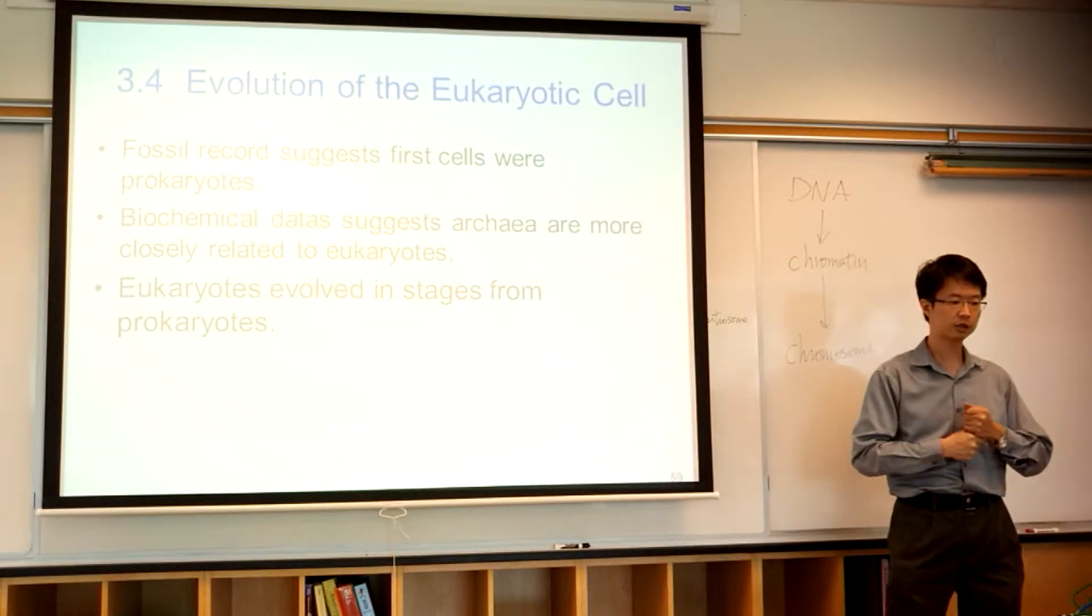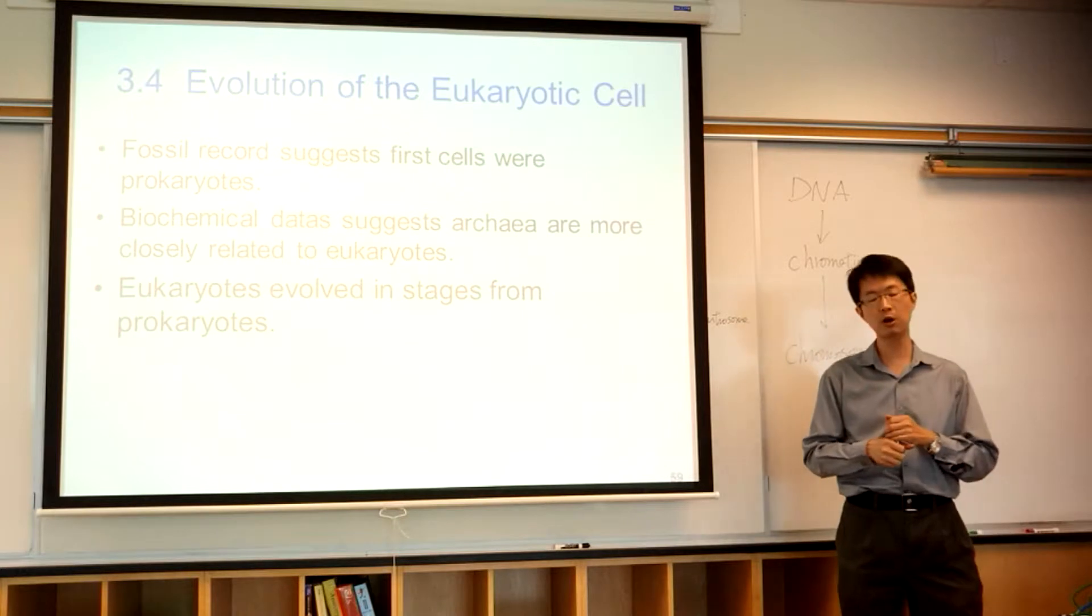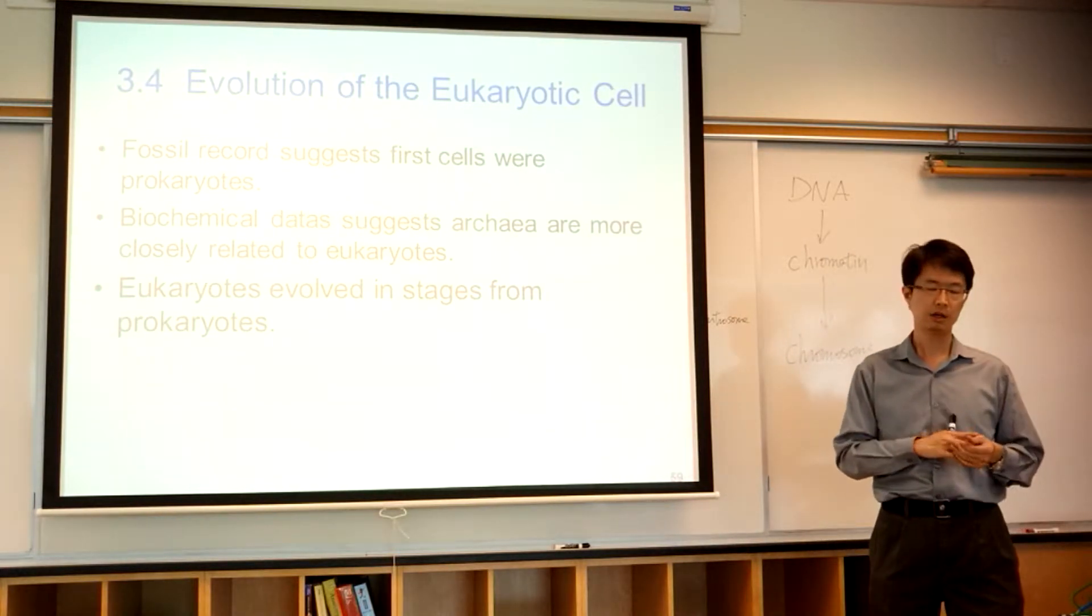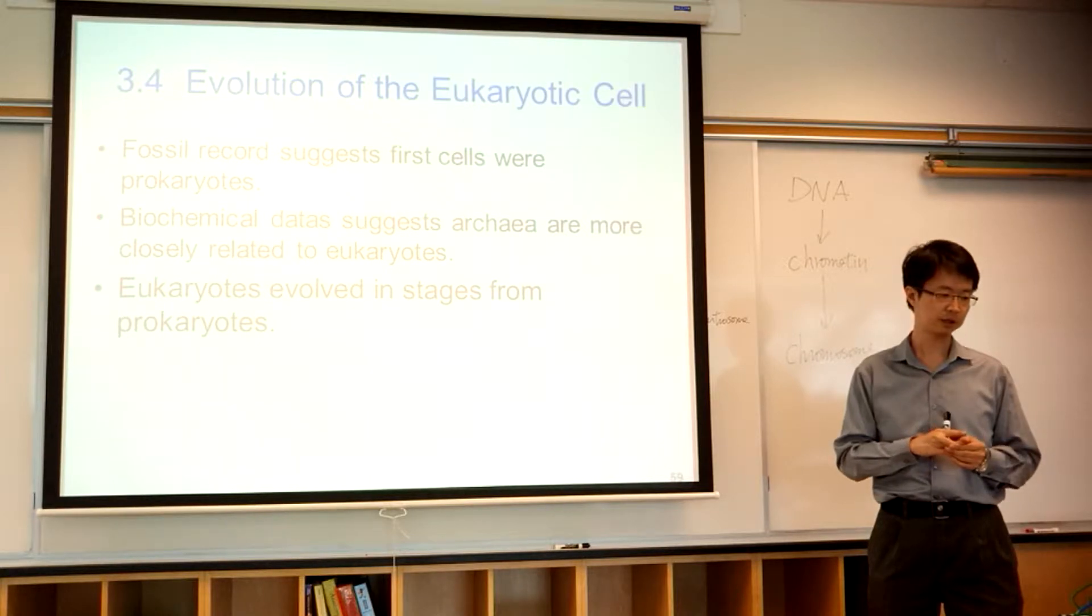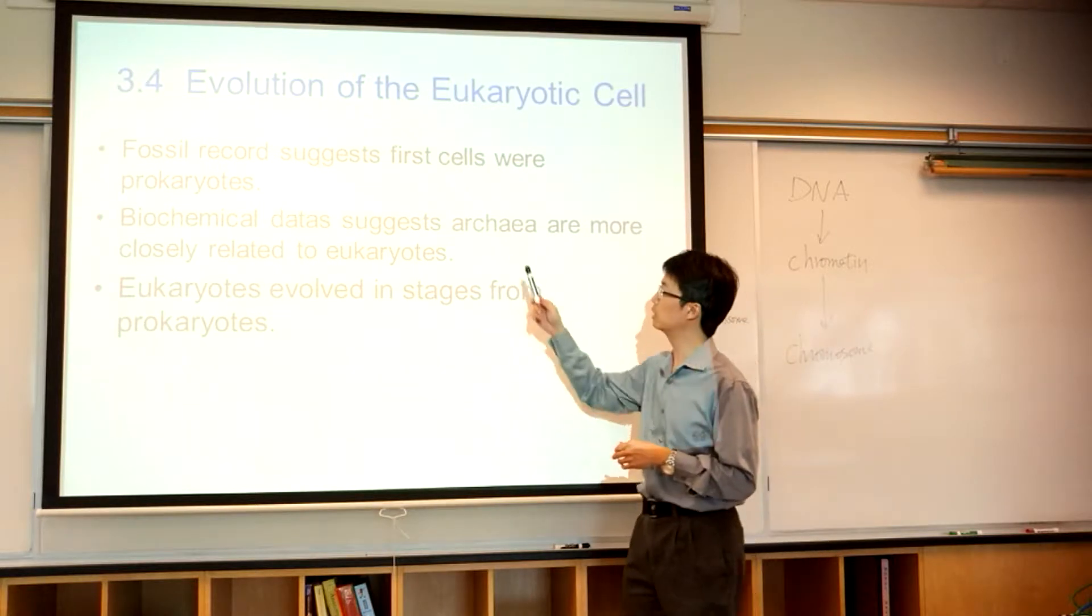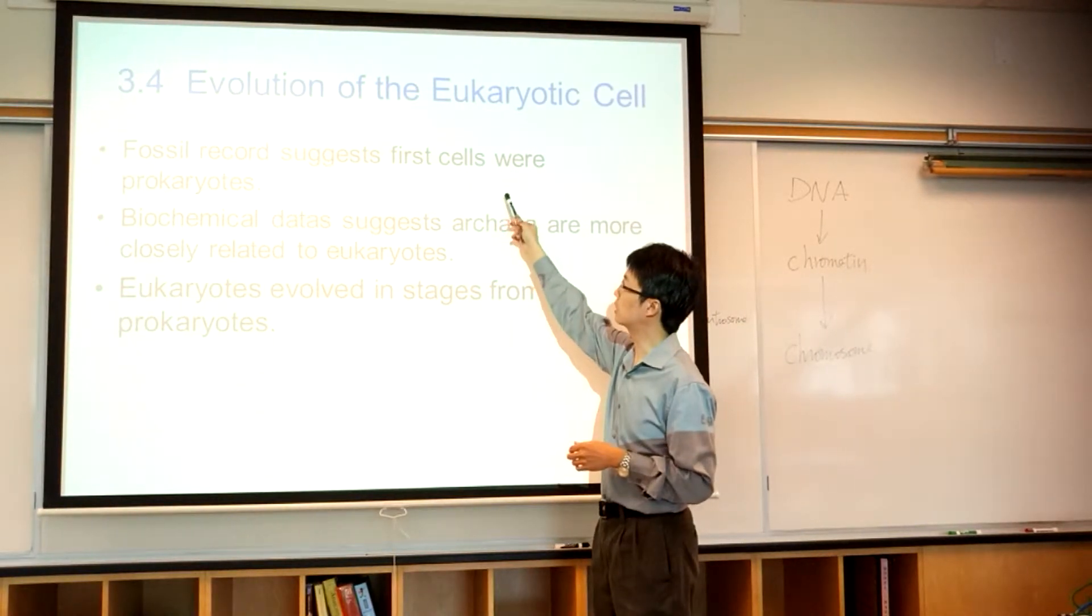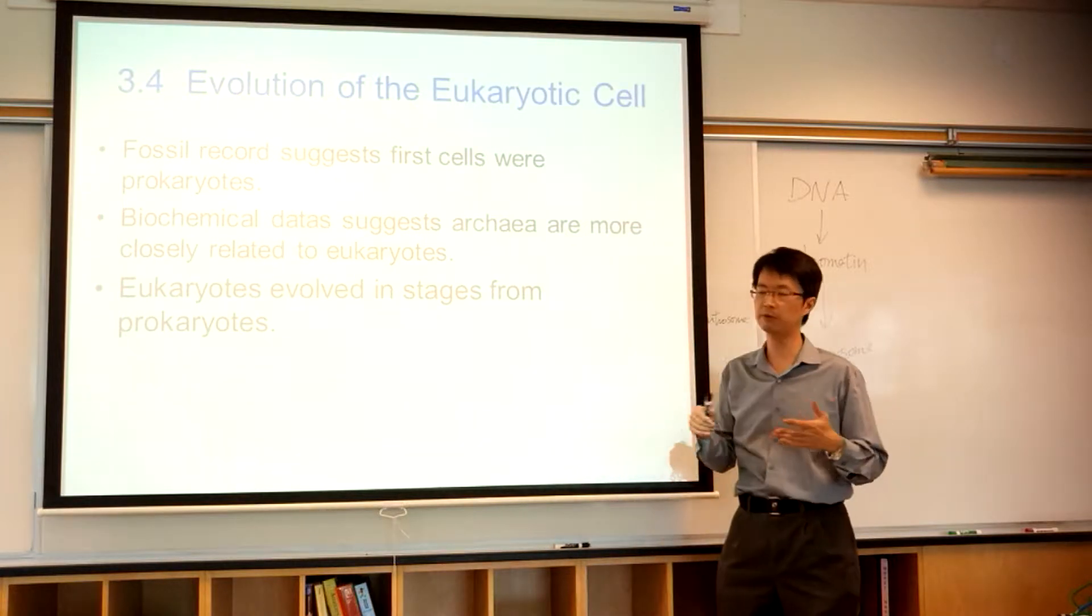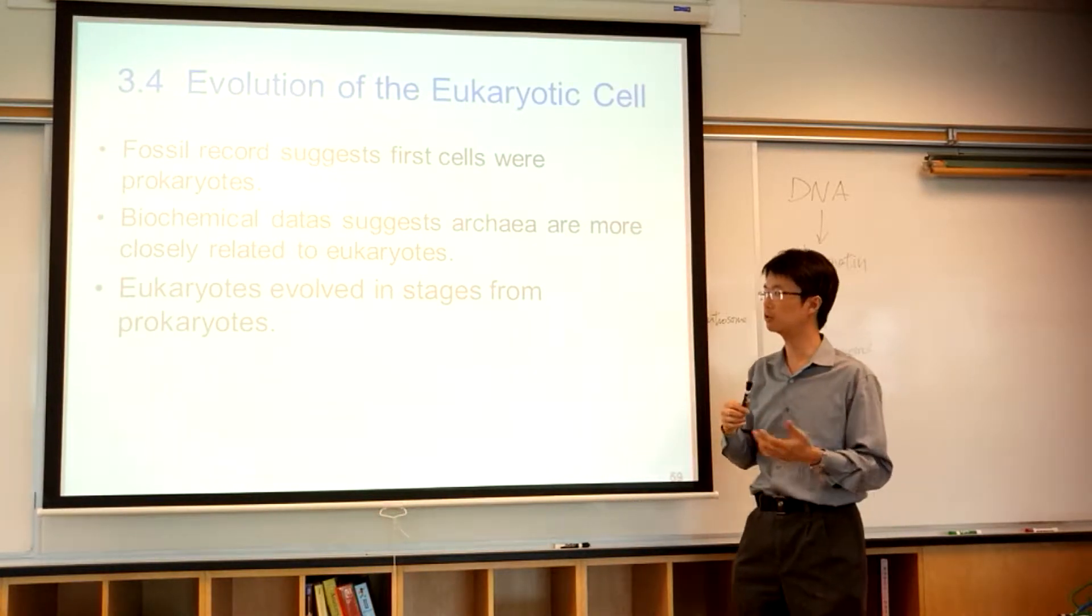Okay, the last part is the evolution. I briefly talk about this—the hypothesis of the mitochondria and chloroplasts. So, from the fossil record, we suggested that the first cells, they are from prokaryote. Prokaryote come first, develop first, and then eukaryote.